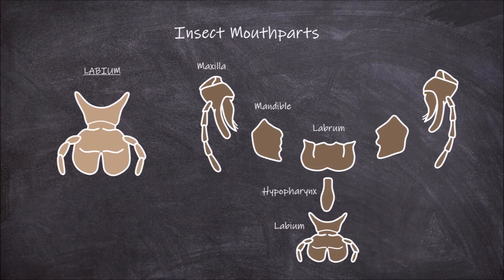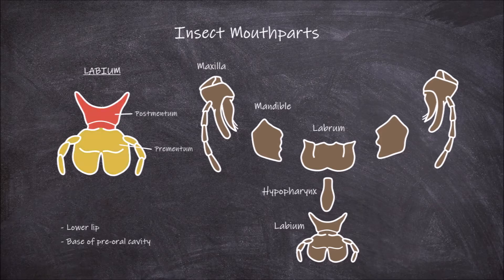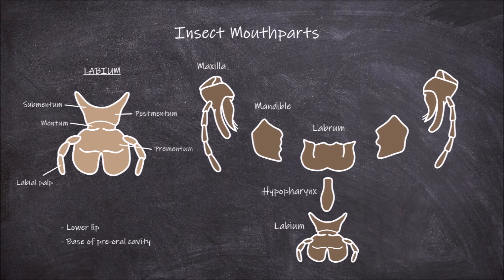The last mouth part is the labium, also known as the lower lip. The labium forms the base of the pre-oral cavity of the insect mouth. It is made up of two larger areas: the postmentum and the prementum. The postmentum itself can be divided into two parts, the submentum and the mentum. The prementum has a pair of labial palps that come off each side. At the end of the prementum there are a pair of glossa, then out from these are a pair of paraglossa. The paraglossa and glossa can be fused, which is known as the ligula.